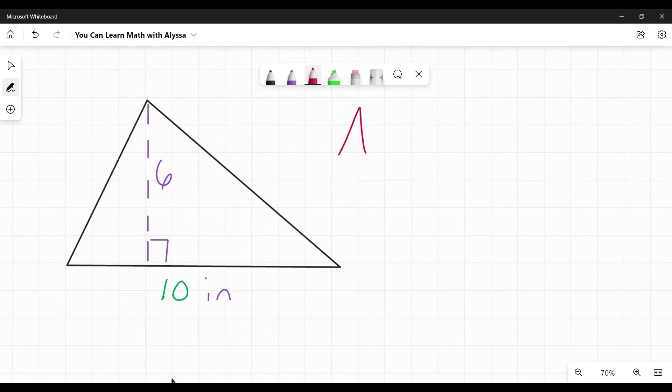The formula for the area of a triangle is area equals one half times the length of the base times the length of its height. Another way of writing this is area equals base times height over two. It just depends on your math book which way they're going to present it.